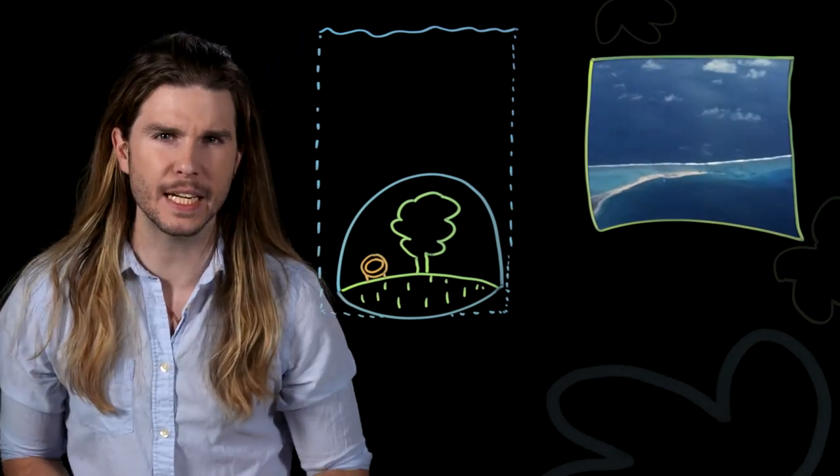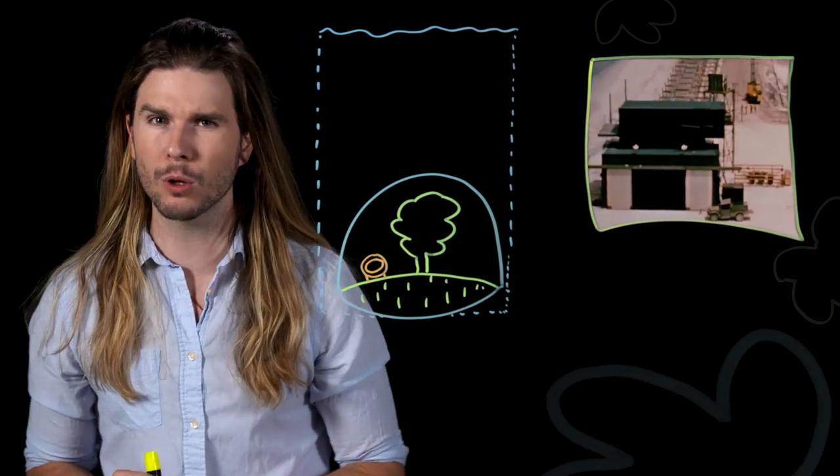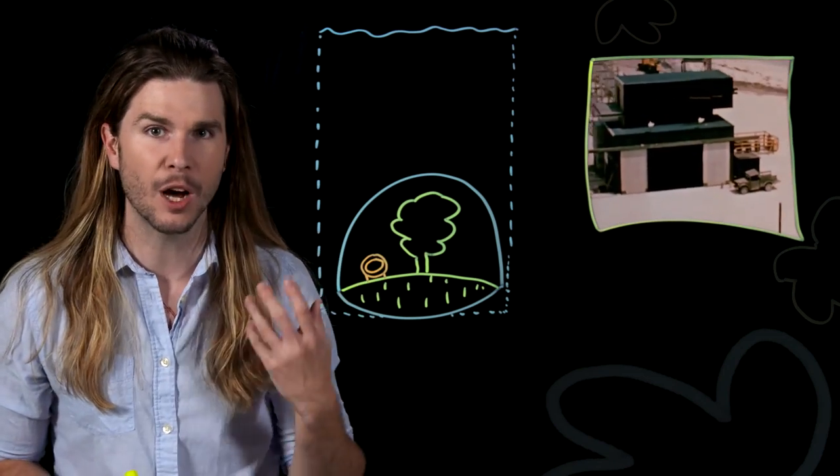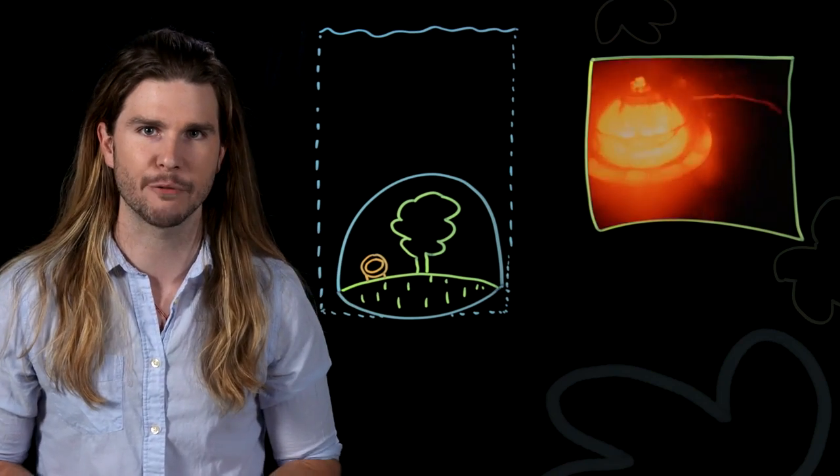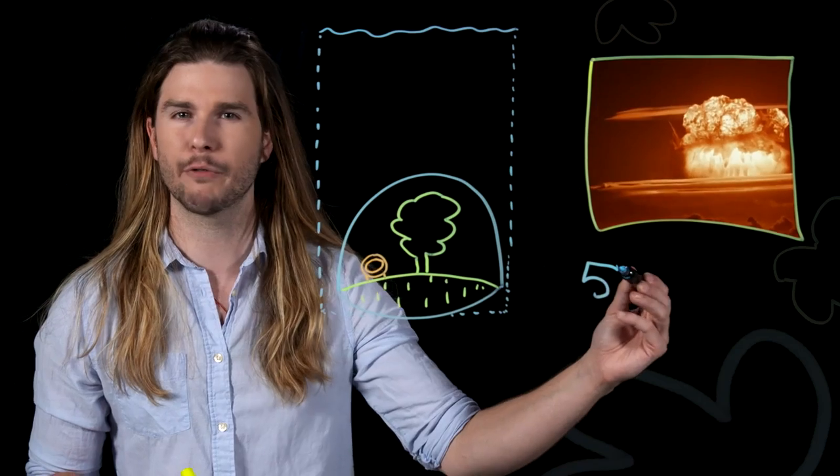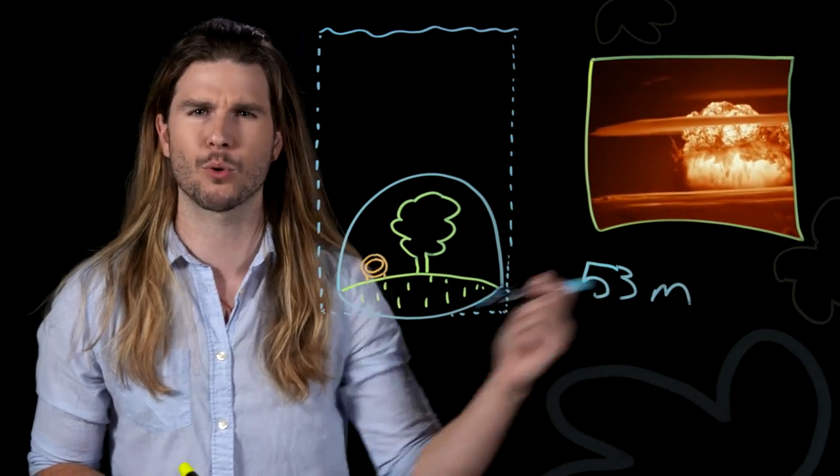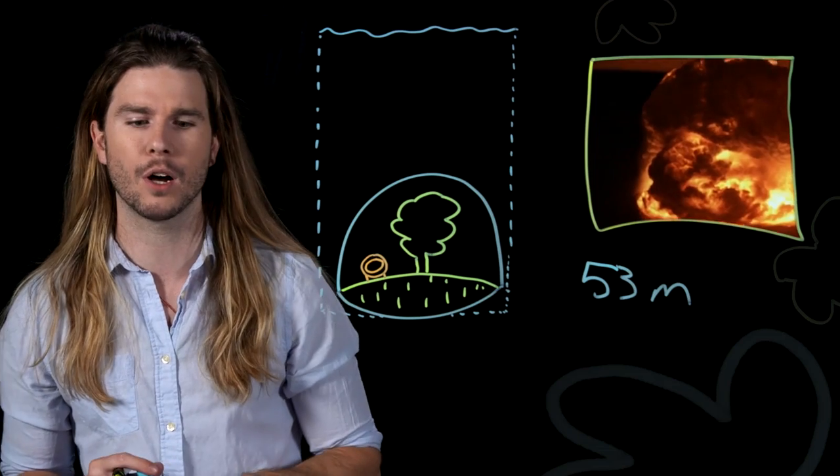The popular theory is that Bikini Bottom is actually at the sea floor of Bikini Atoll, an atoll in the Marshall Islands that was famously home to 23 different nuclear tests in the 1940s and the 1950s. The sea floor of Bikini Atoll doesn't get much deeper than 53 meters, or around 175 feet, so that's gonna be the height of our water column.